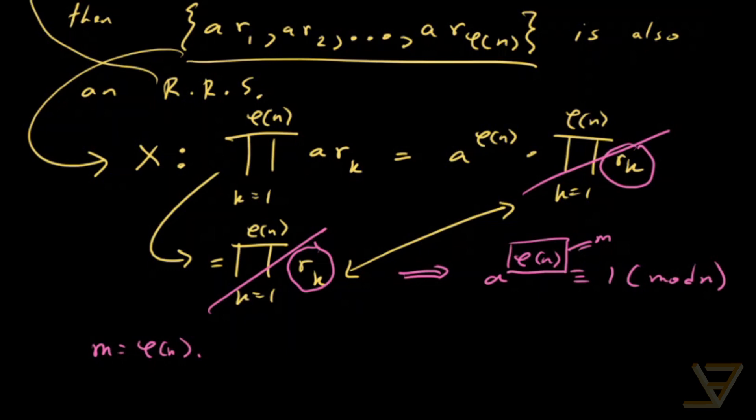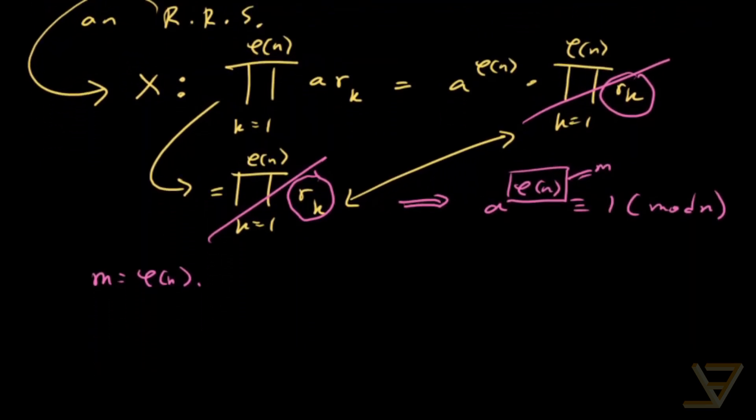Now notice that this is not the smallest number either for an individual a or all a. There's often smaller numbers that work and that relates to something called order theory. But that's a bit too advanced for this particular video.